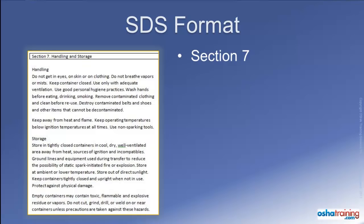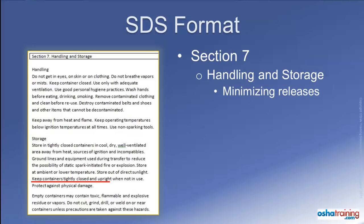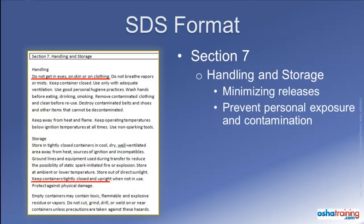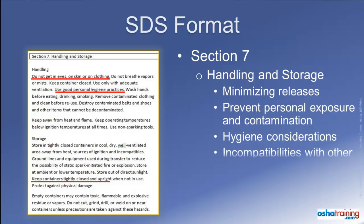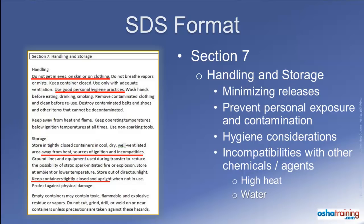Section 7 will provide information pertinent to safe handling and conditions for safe storage of the product. The required information consists of precautions for safe handling to prevent or minimize the release of the chemical into the environment, to prevent exposure or contamination for personnel handling the product, and recommended hygiene practices — for example, prohibitions against smoking, eating, or drinking in or near areas where the product is being handled. When the product is being stored, there may be a need to avoid certain incompatible materials or agents such as high heat or water that might cause the product to react.